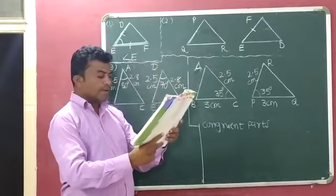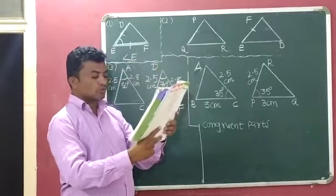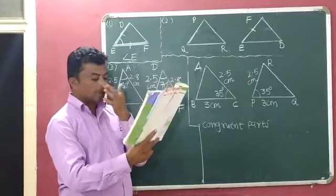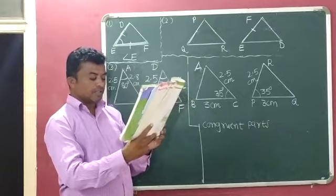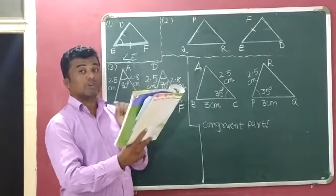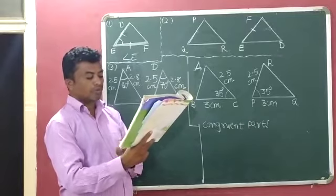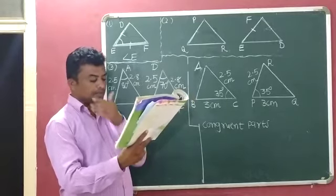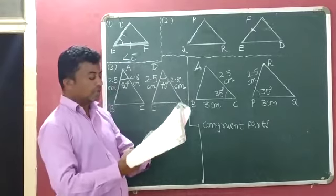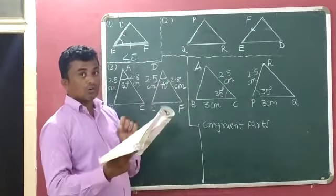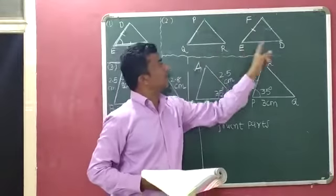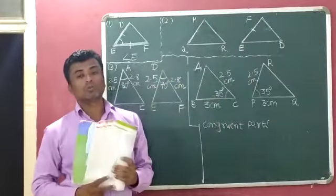Question number 2: By applying the SAS congruence rule, you want to establish that triangle PQR is congruent to triangle FED. It is given that PQ is equal to FE and RP is equal to DF. What additional information is needed to establish the congruence? We have to establish the congruence condition of triangle PQR and triangle FED.